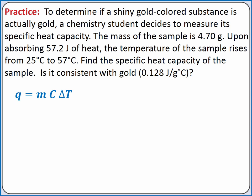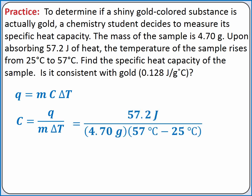We want to solve for specific heat capacity. Rearranging our equation, we get specific heat capacity equals heat divided by mass times change in temperature. We can plug our values in from the problem, calculating the change in temperature as the final temperature minus the initial temperature.